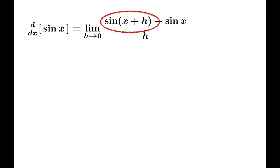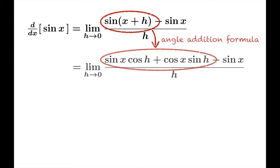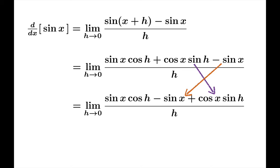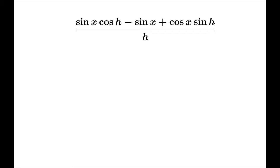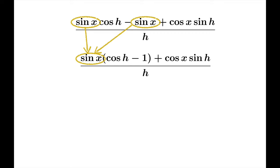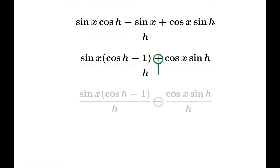First, let's apply the angle addition formula for sine to expand sine of x plus h. Next, we'll simply rearrange a couple of terms. We're going to do a lot of algebra on this expression, so let's set it off to the side out of the limiting process for the moment. We will factor out this common sine from the first two terms. We will break this expression into the sum of two fractions.